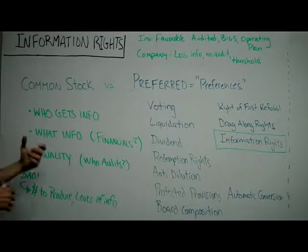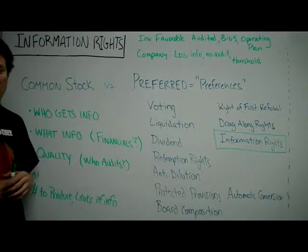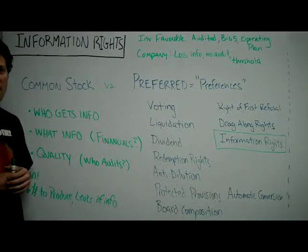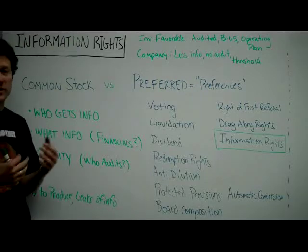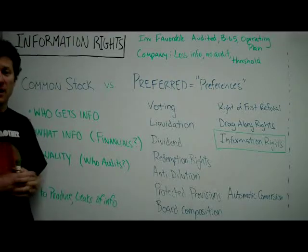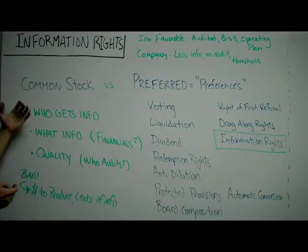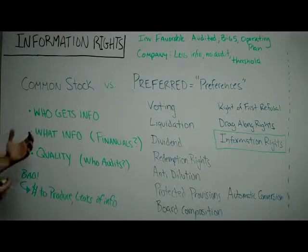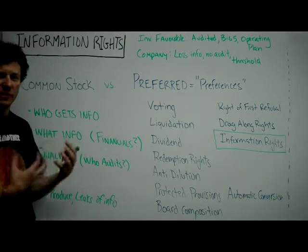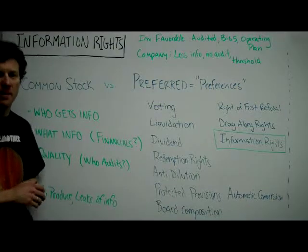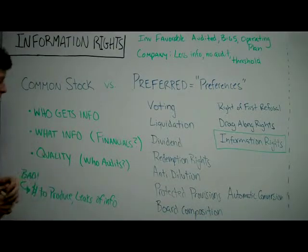What information? Is it financials? Is it an operating plan? How detailed is it? And then, of course, quality — is it audited? Who oversees it? How often do they get it? So really you're saying, as a preferred stock shareholder, one of the preferences you have is the right to get this information from the company at a certain timeframe and of a certain quality.